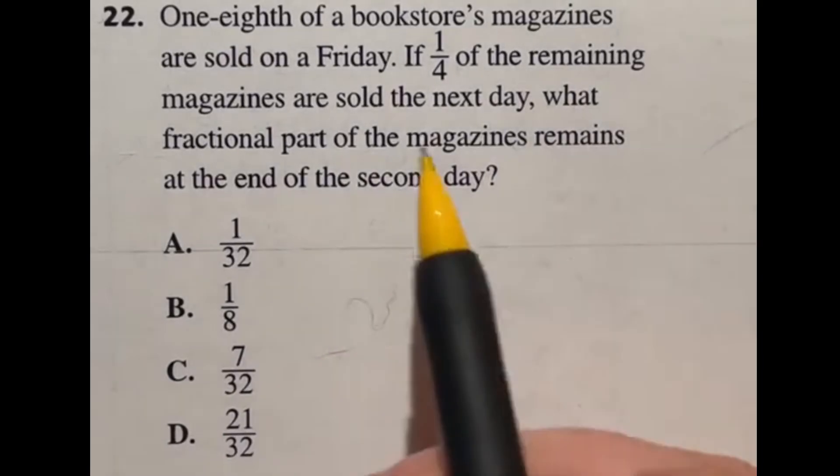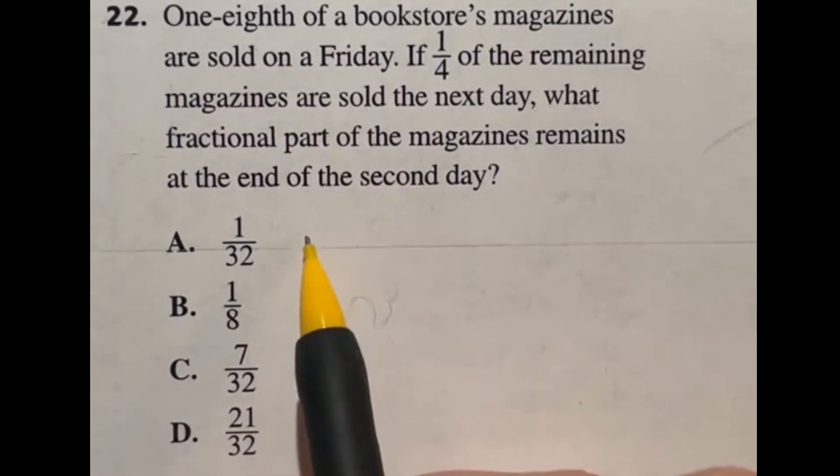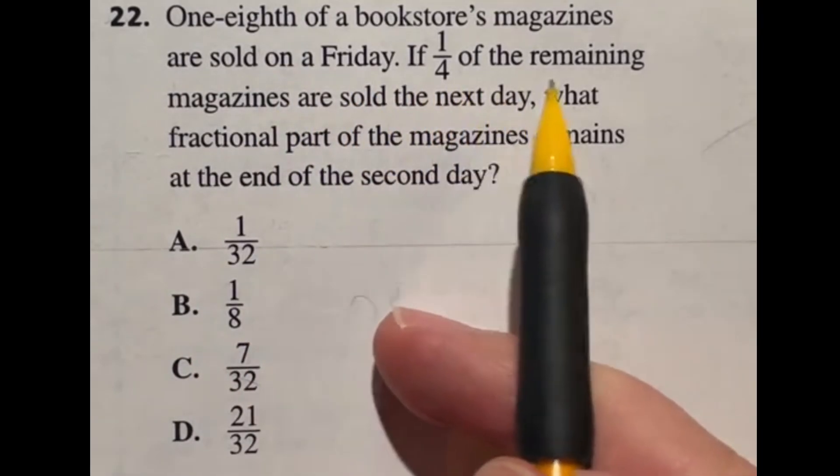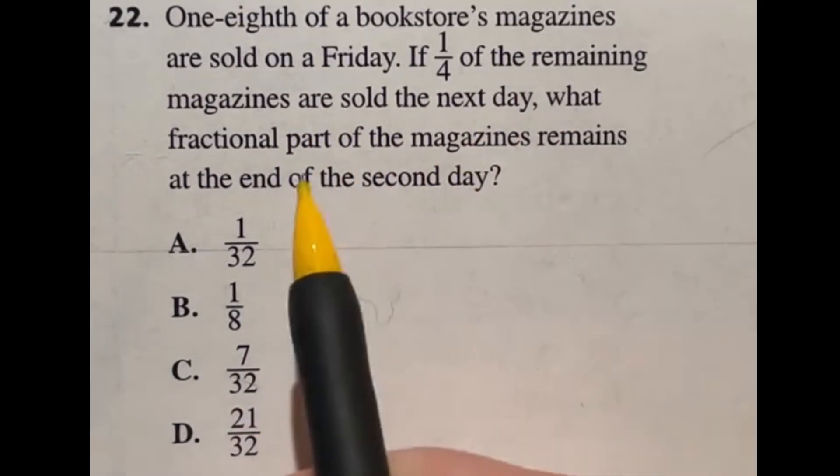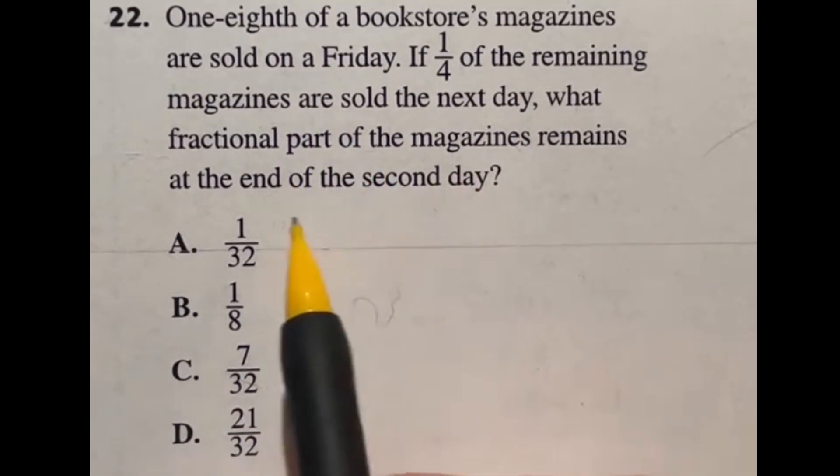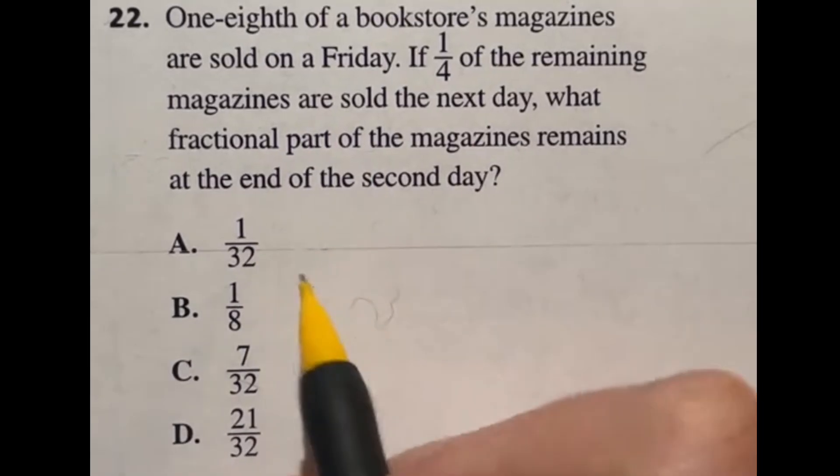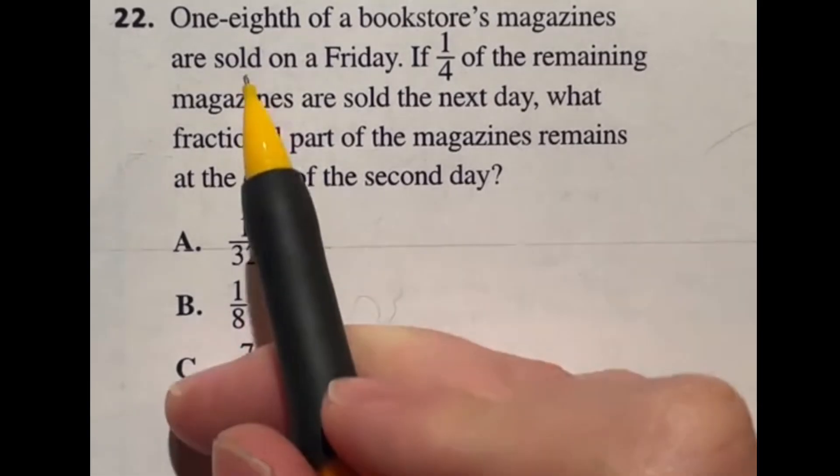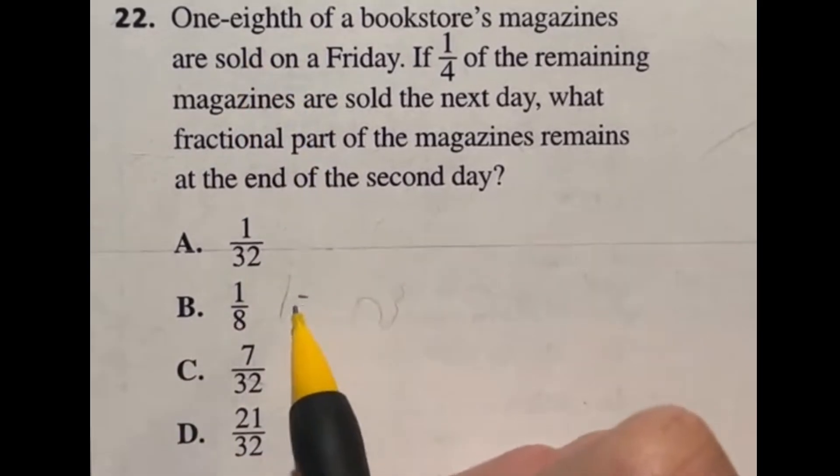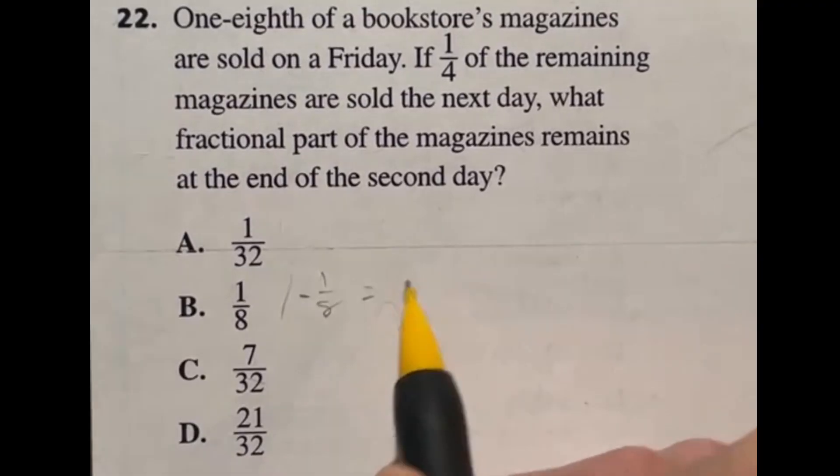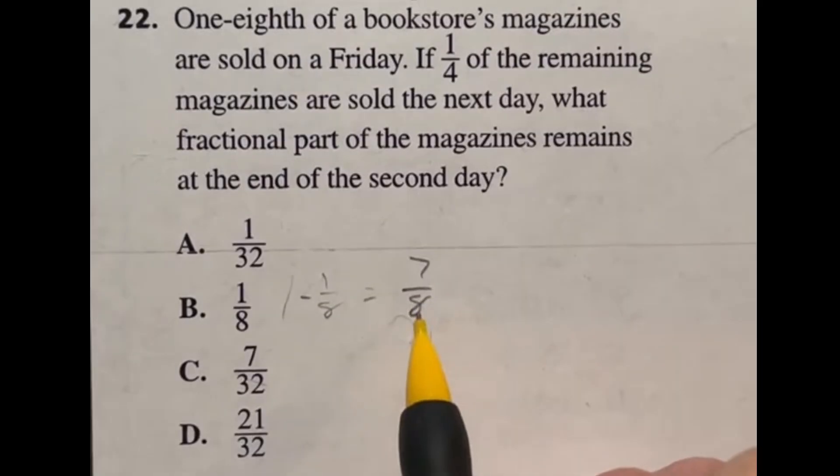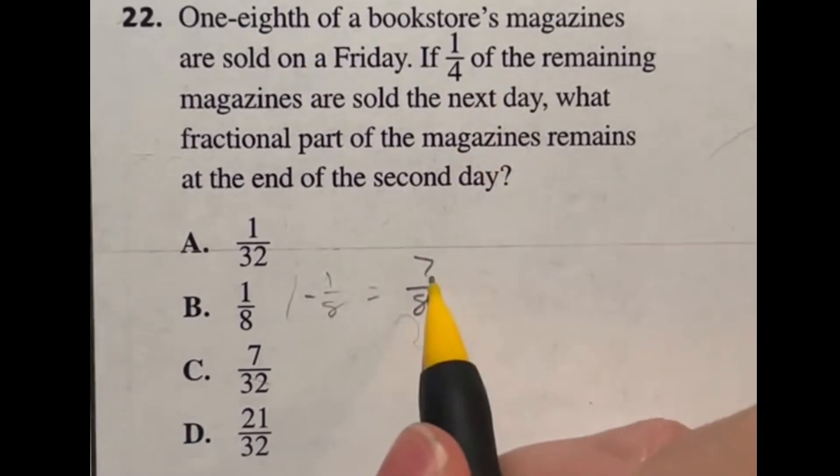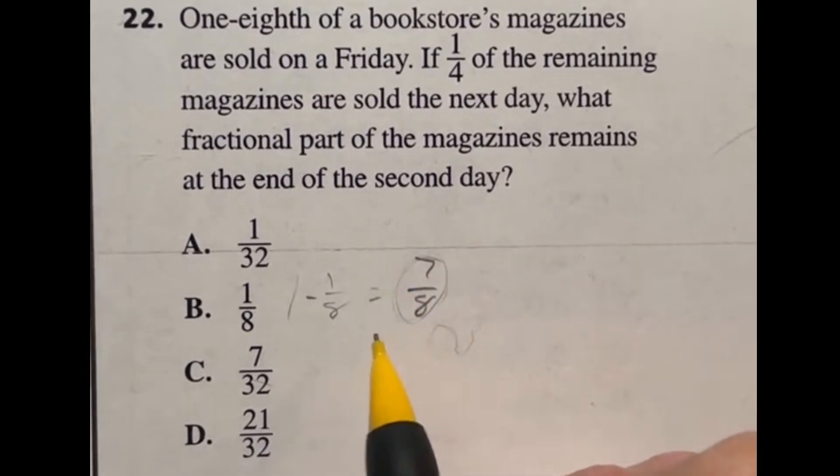Everyone's least favorite subject, fractions. Problem 22 says one eighth of a bookstore's magazines are sold on Friday. If one fourth of the remaining magazines are sold the next day, what fractional part of the magazines remains at the end of the second day? We're looking here at a total of one, but they lose one eighth right off the bat.